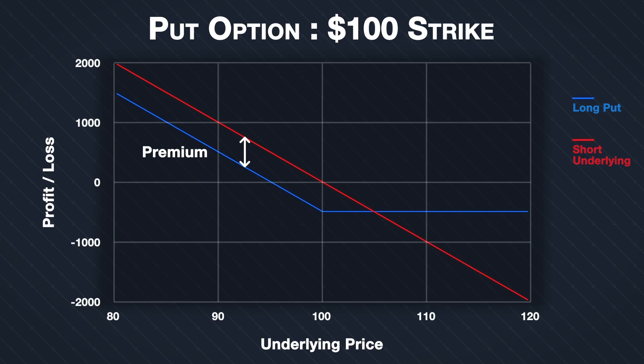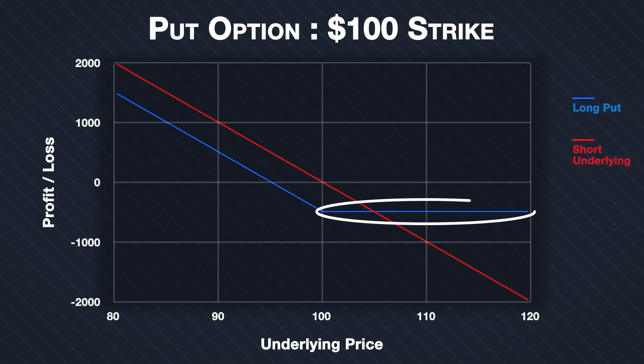So far it's not looking very favorable for the put option. But now look at what happens when the underlying price increases instead — the losses of the put option are limited to the $500 premium paid, no matter what happens to the underlying price.